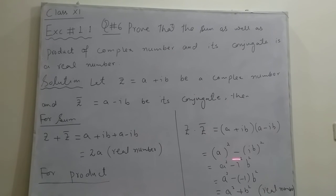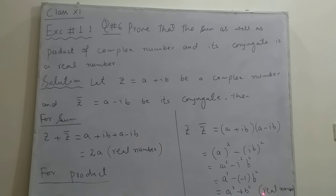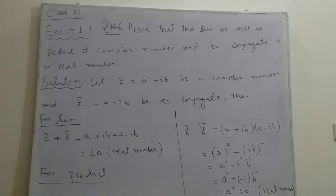So it is proved that sum of complex and its conjugate, also product of complex and its conjugate, gives a real number. Thank you.